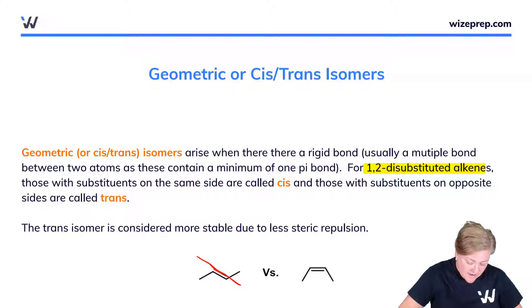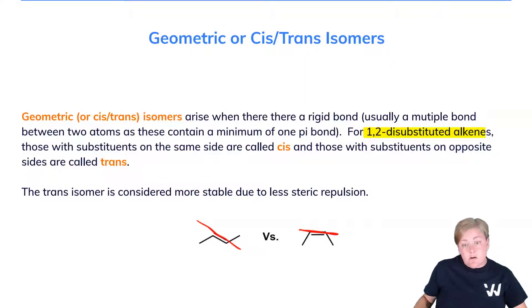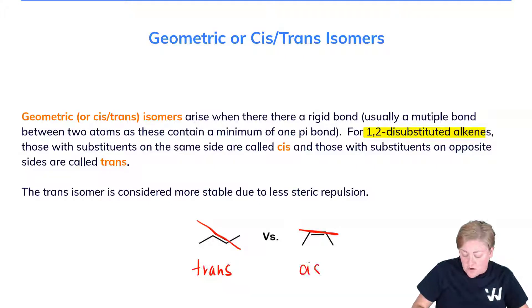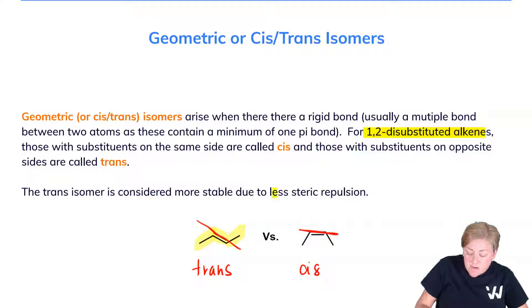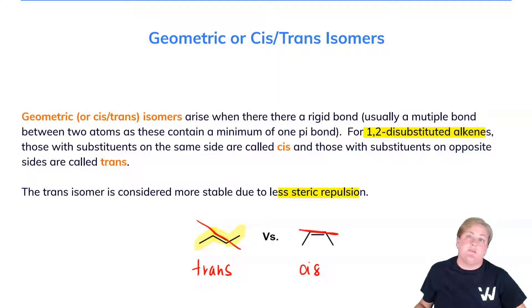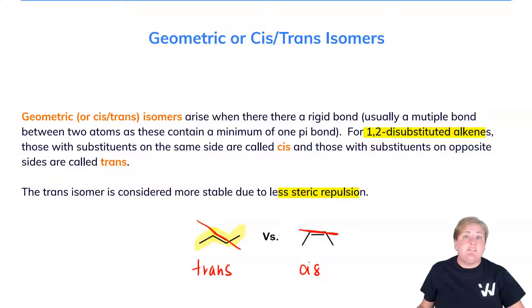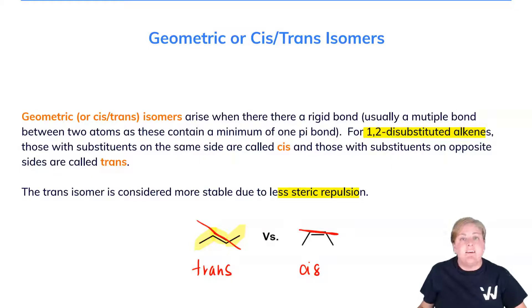So we think about cutting this in half here or here. This structure here on the left is called trans, and this one here on the right is called cis. Now it's worth noting that the trans isomer is considered more stable due to minimized steric repulsion between the two groups. So 1,2-disubstituted alkenes have pretty easy jargon — they're cis or they're trans, depending on whether groups are on the same side or opposite sides.